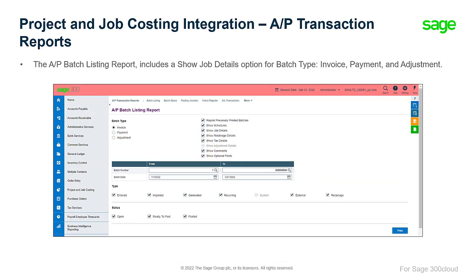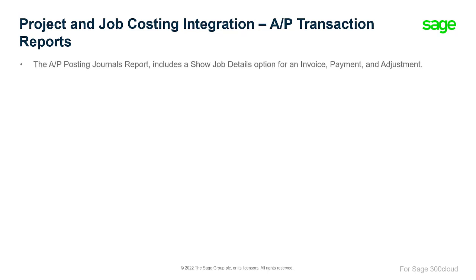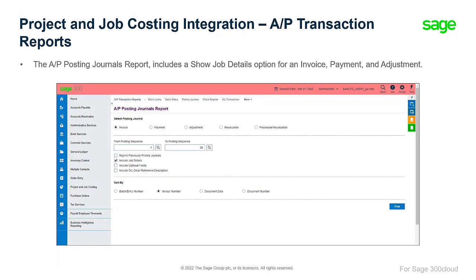The Accounts Payable Batch Listing report now includes a Show Job Details option for the batch types Invoice, Payment, and Adjustment. Similarly, the Accounts Payable Posting Journals report gives you the option to include job details in the report for an invoice, payment, and an adjustment.